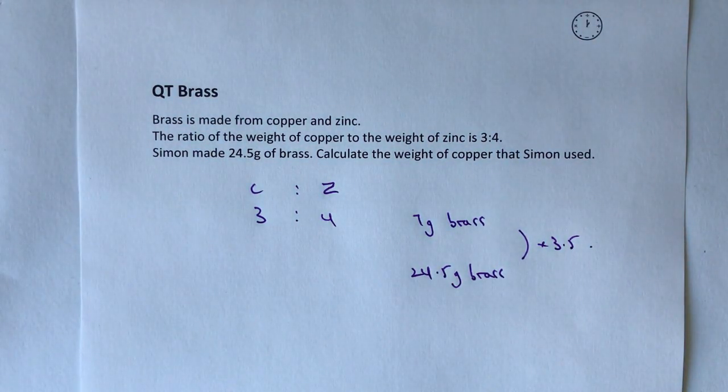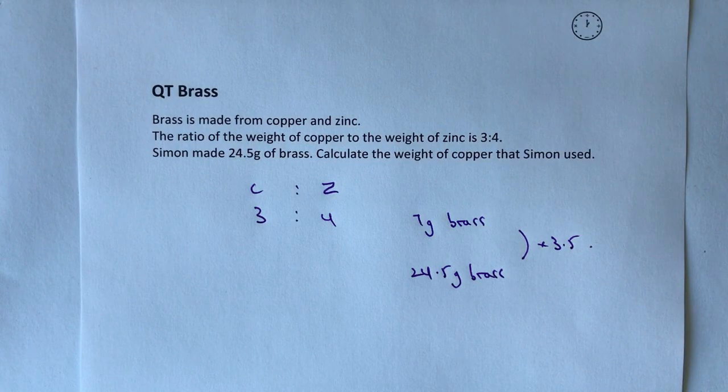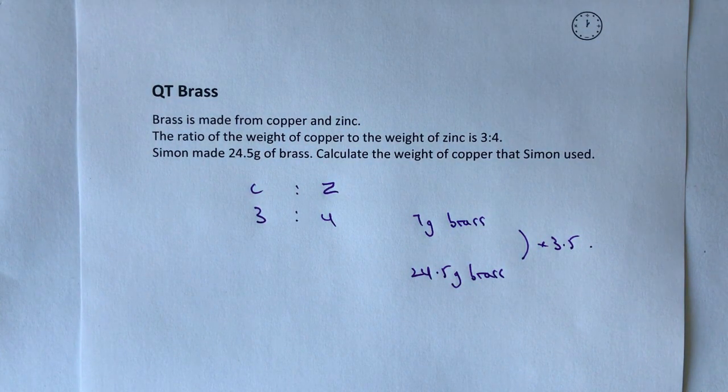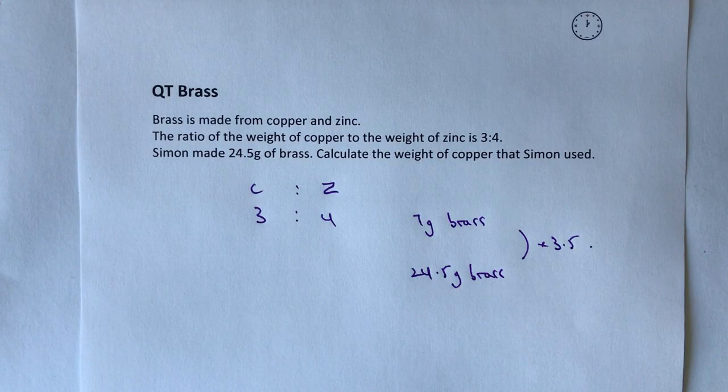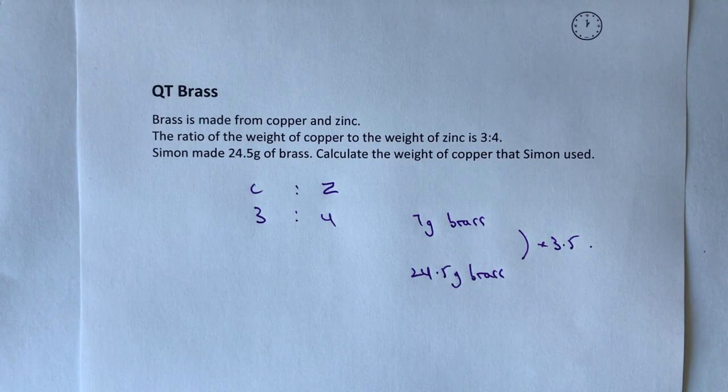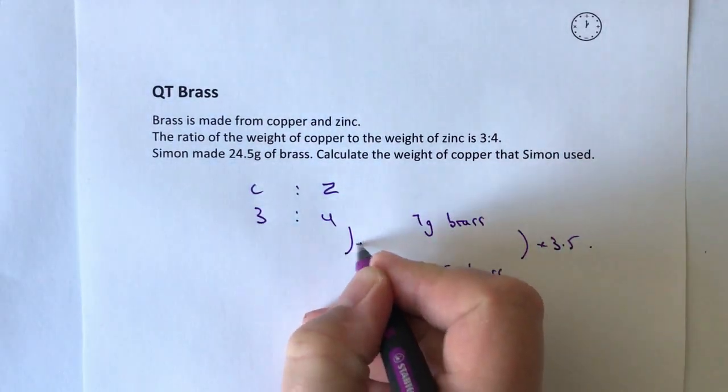In other words, I want three and a half times seven grams in order to get my 24.5. And because I've multiplied that by three and a half, I multiply the other two by three and a half as well.